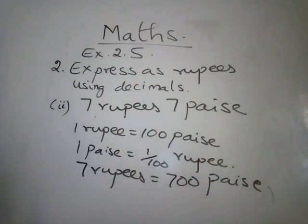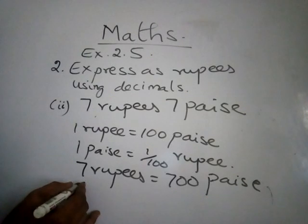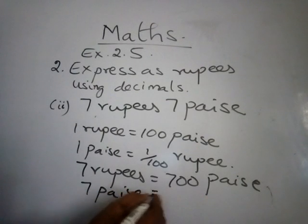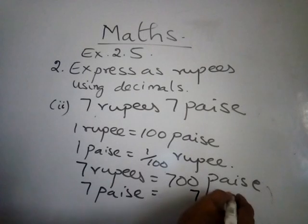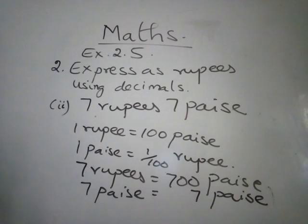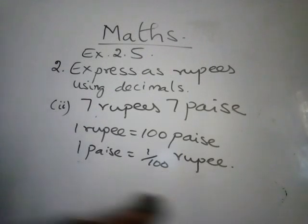Along with this, we have to add 7 paise. So we have to add 7 paise. So this 7 paise, just we add here. 707 paise. Just let me combine this. So totally 707 paise. But it should be written in rupees.